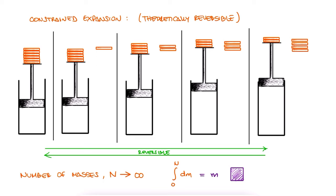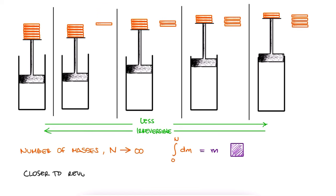Now of course, having an infinite number of masses is not possible. But what this example serves as is to show that some processes are more irreversible than others. And the closer we get to an idealized, reversible process, the efficiency of that process itself is going to be higher. We'll see this in just a second.